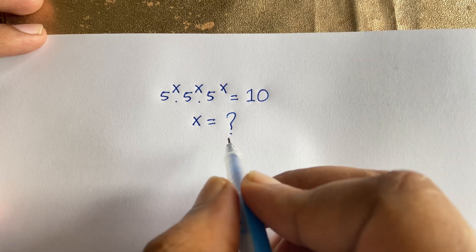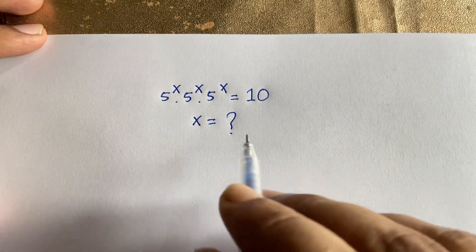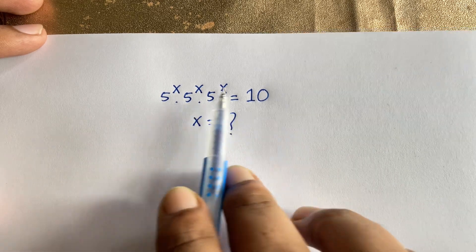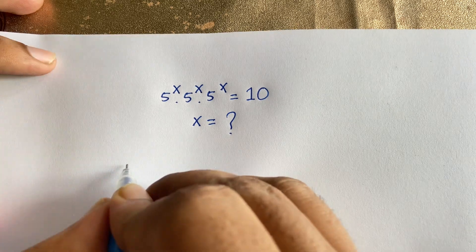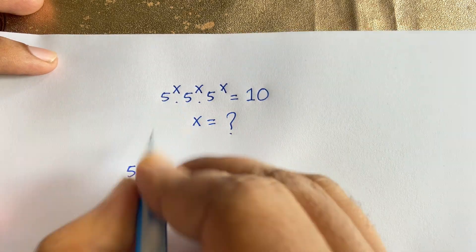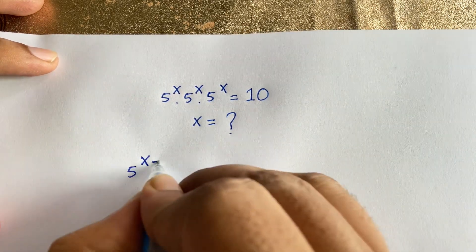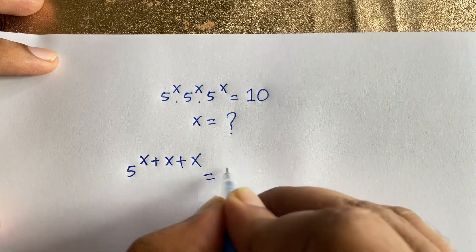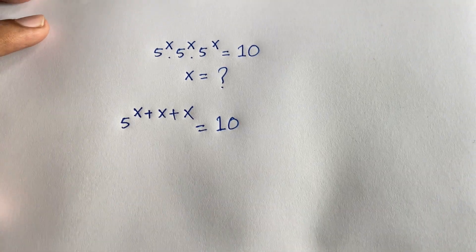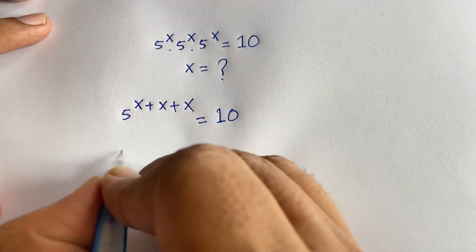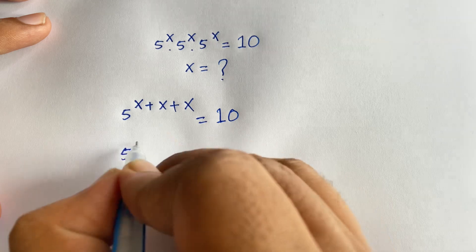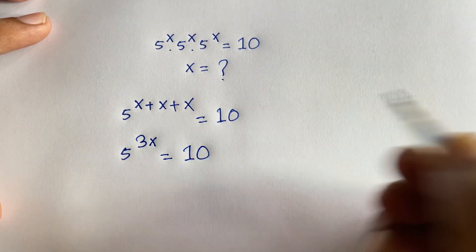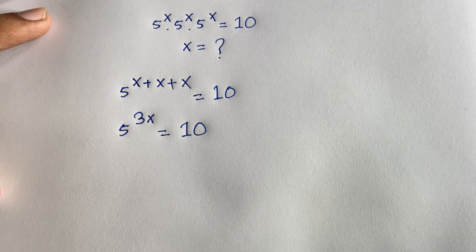How to solve this math olympiad question? According to exponential rules, the bases are the same, so I can easily add the exponents. It will be 5 to the power of this exponent plus this exponent plus this exponent, which equals 5 to the power 3x, is equal to 10.